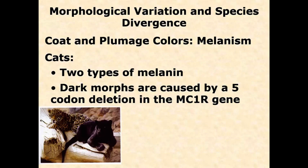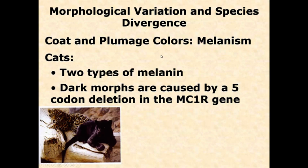This discussion will complete our overview of the evolution of melanism, and we're going to look across a wide group of organisms, but we're going to begin with the example we set up in the last discussion of the melanic forms of leopards. Now, there are two different types of melanin, and there are multiple genes that are involved in the production of this pigment.